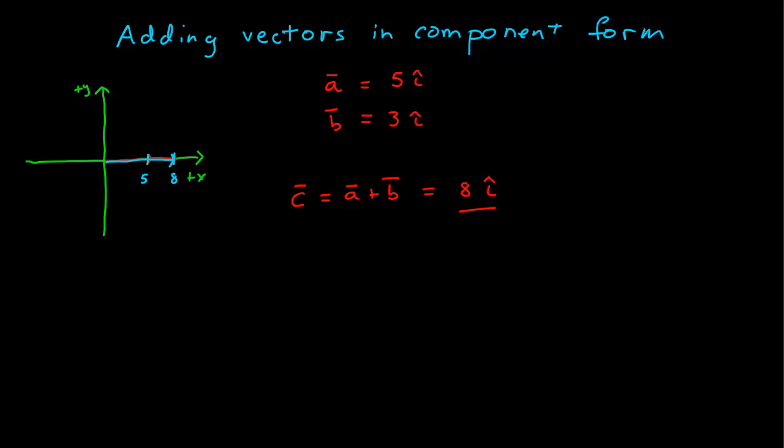And so this gives us a general way, an easy way to do addition in vector form. If I were to write this out, a is 5 i-hat plus b, which is 3 i-hat, and then I can combine the magnitudes together, 5 and 3 all in the same direction. As long as I'm adding vectors in the same direction, I can simply add their magnitudes together, and that becomes a very powerful and simple way to add vectors in component form.